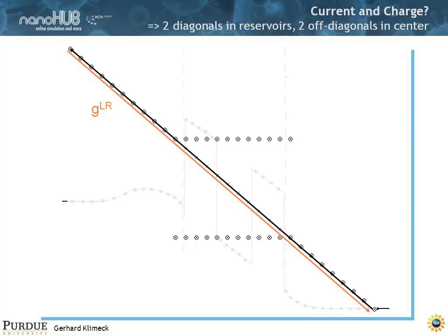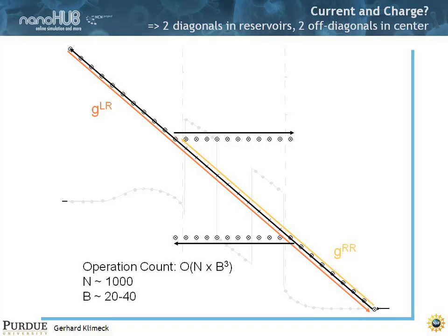Once you have one diagonal matrix element here, you can start walking sideways over here and over here. The beautiful thing about this algorithm is that its operation count goes as n times b cubed, where n is the number of sites and b is the block size. Block meaning if you have a 10 by 10 matrix, it would be 10 cubed because you end up having to invert each block. So typically for multiband structures and RTDs, you might have block sizes from 10 to 20 and you might have a thousand sites. So basically you have an order n algorithm to solve this problem rather than an n cubed algorithm.